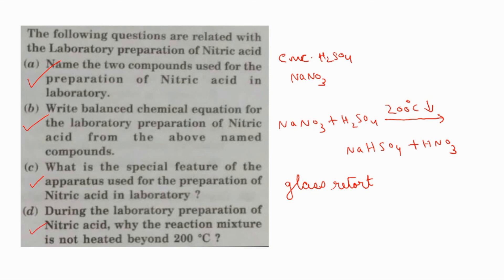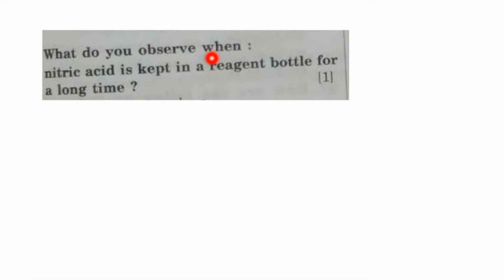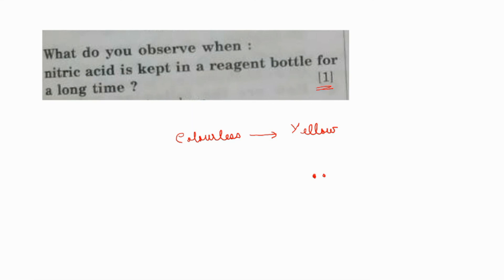Why is the reaction mixture not heated beyond 200°C? Because above 200°C you get sodium sulfate, which sticks to the glass apparatus as a hard crust. What do you observe when nitric acid is kept in a reagent bottle for a long time? Nitric acid is a colorless liquid, but after some time it undergoes decomposition and turns yellow in color. We have discussed each and every point related to the laboratory preparation of nitric acid and solved many board questions.